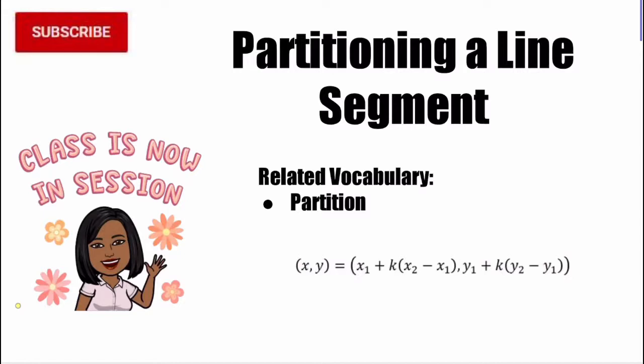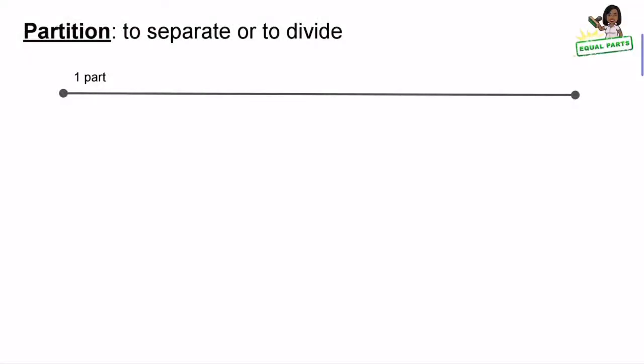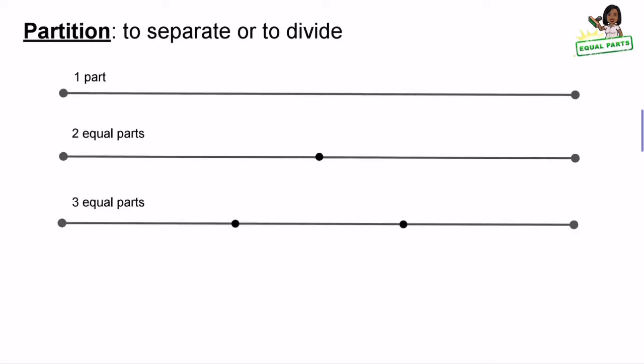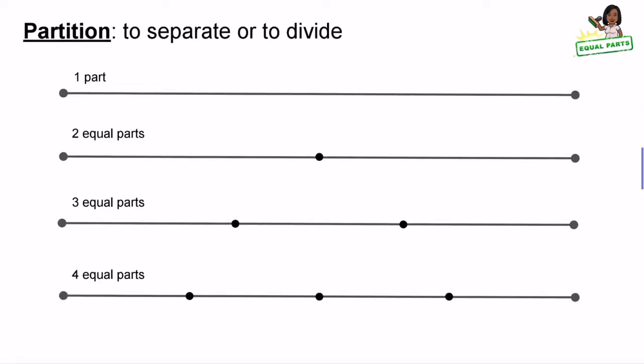Today's topic is partitioning a line segment. To begin this lesson, let's start with defining the word partition. Partition means to separate or to divide. So what we have in front of us is one segment. We can take this same segment and divide it into two equal parts, three equal parts, and four equal parts.